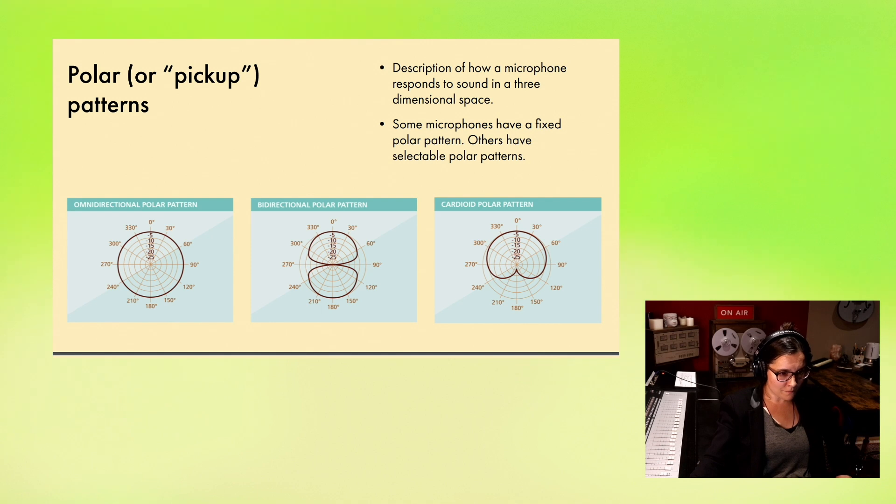For those of us who are visual folks, let me pull these up. These are two dimensional diagrams of what we experience in a three dimensional space with microphones. Think of this as looking at a bird's eye view from above the microphone. Zero degrees on these diagrams represents the front of the microphone. 180 would represent the rear of the microphone. 90 and 270 would be the sides of the microphone.